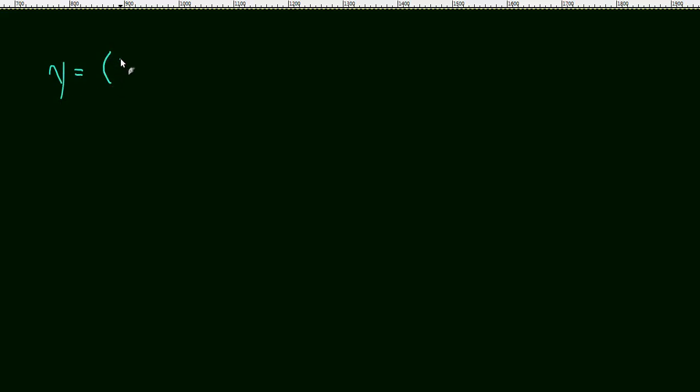Let's say we have y equals 3x plus 1 squared. So this is the exact same function that we were looking at in the last video. We called it a composite of two functions. Now let's look at it a little differently.